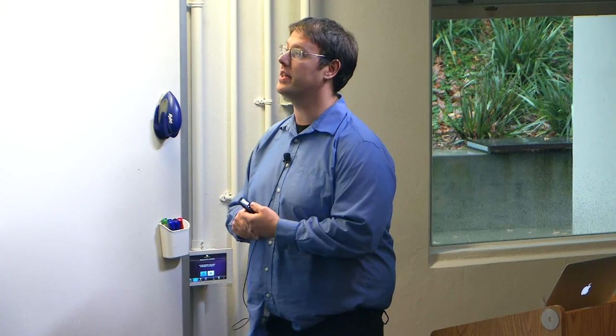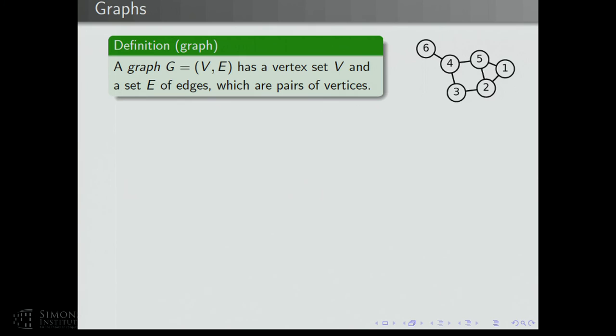We'll start slowly and then pick up. A graph G has a vertex set V and a set E of edges, which are pairs of vertices. This is an example of a graph on six vertices. The circles are the vertices, and the edges are pairs of vertices denoted by these little segments. There are seven pairs of vertices which make up edges of this graph.